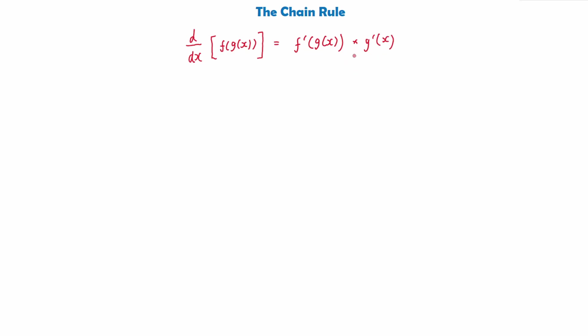Now this might be quite confusing, but the best way to get your head around it is by looking at particular examples. To state it simply: to differentiate a composite function, we differentiate the outer function first, the bracket stays the same, and then we multiply by the derivative of what is inside the bracket.